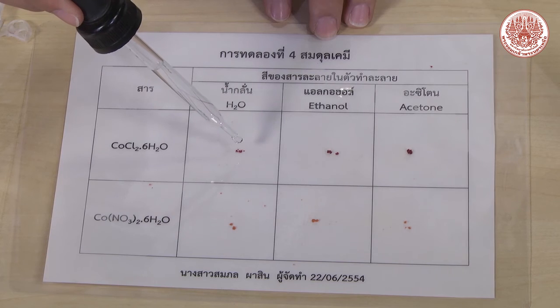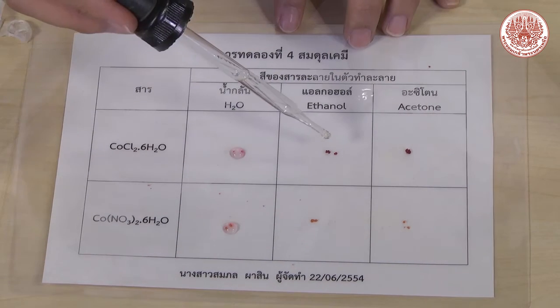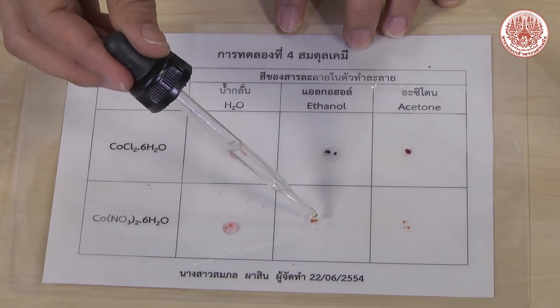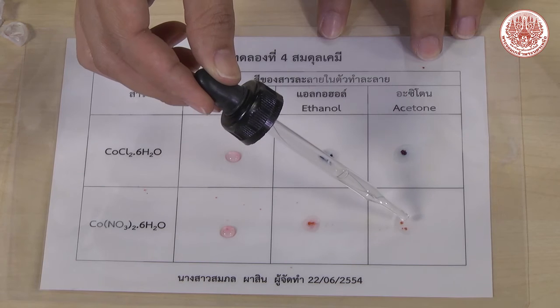In the first column, add water one drop. The second column, add ethanol. And acetone is on the third column. Record the color of the solution.